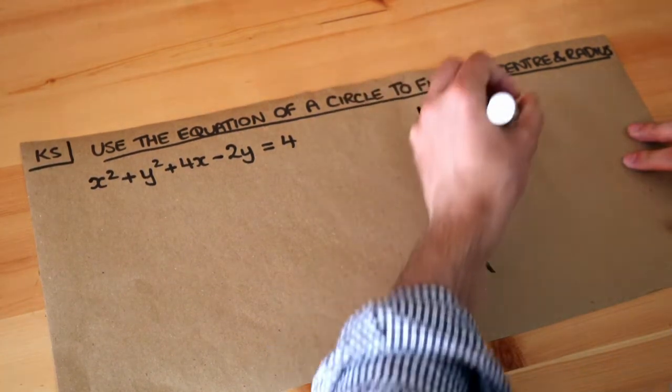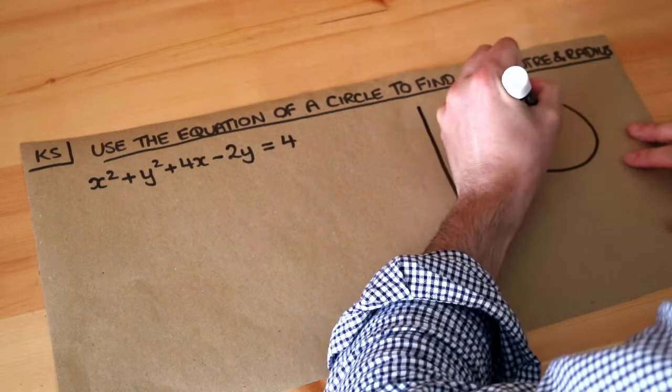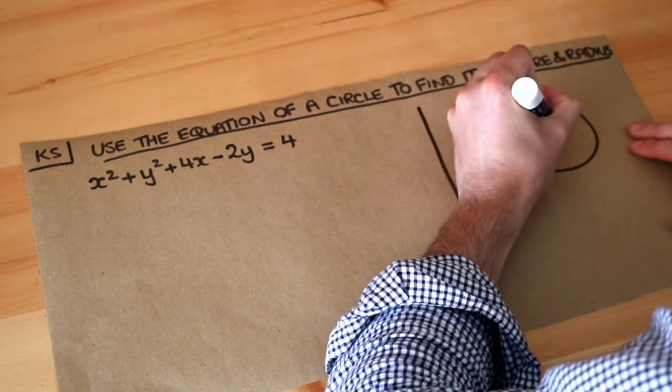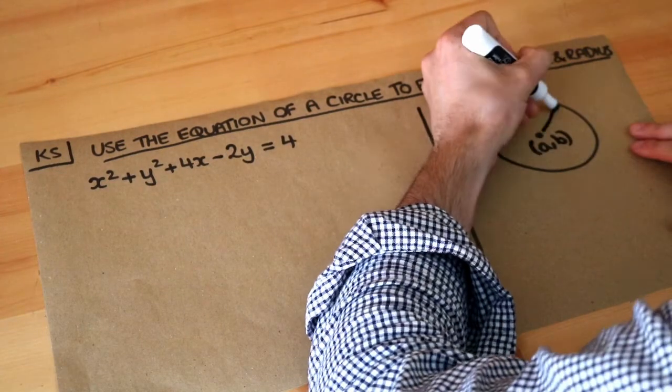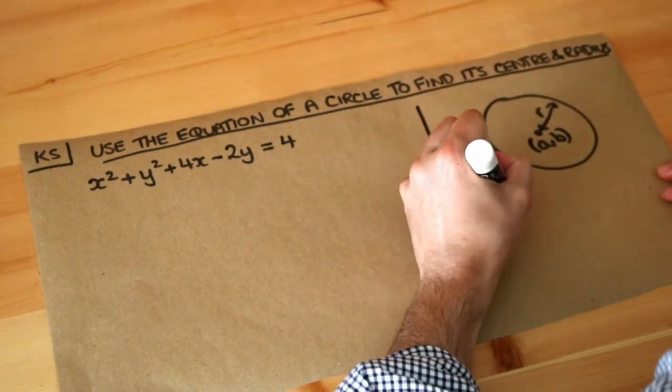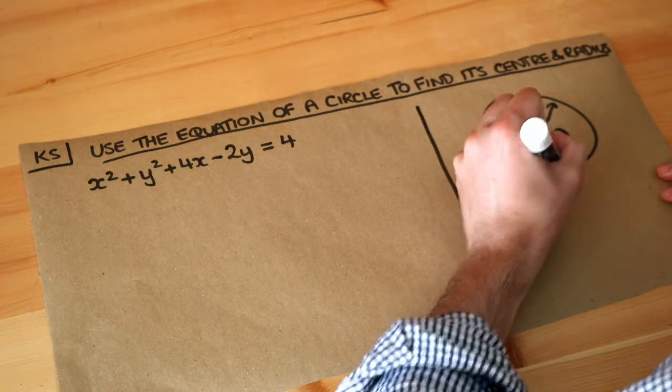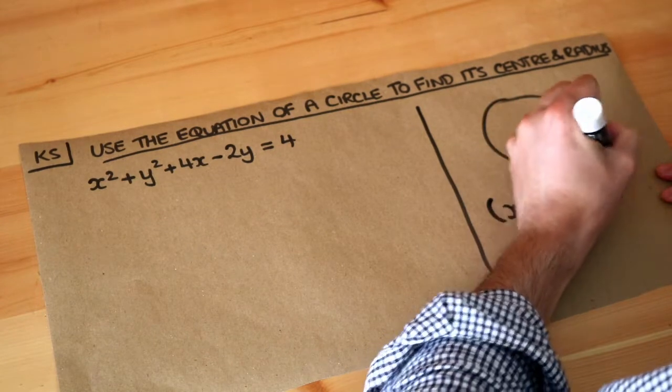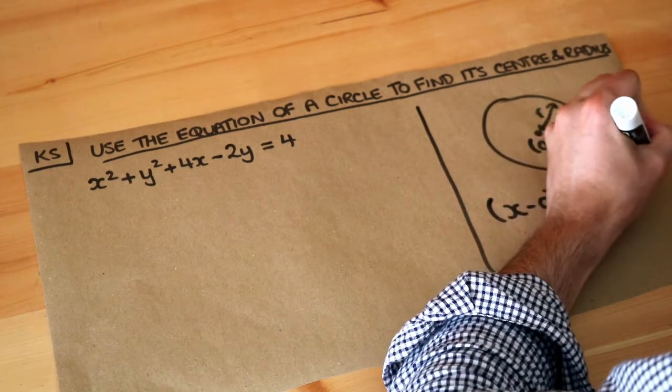Now in a previous video we saw that if we had a circle with center coordinates a, b and radius r, then the equation of the circle was x minus a squared plus y minus b squared equals r squared.